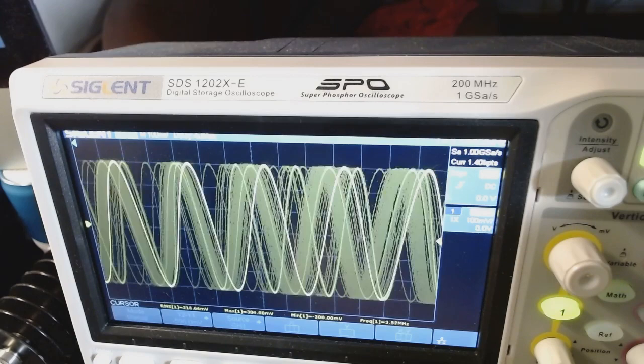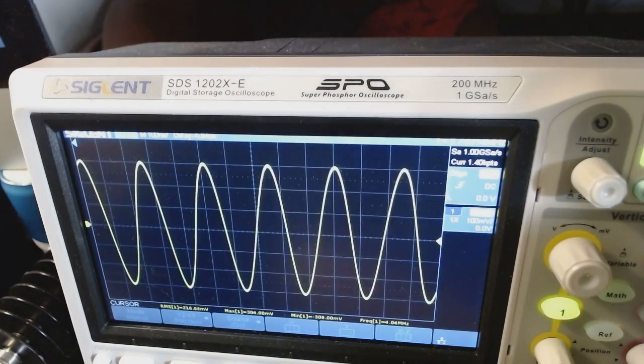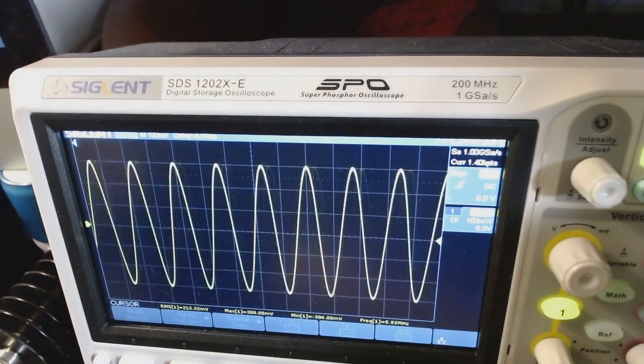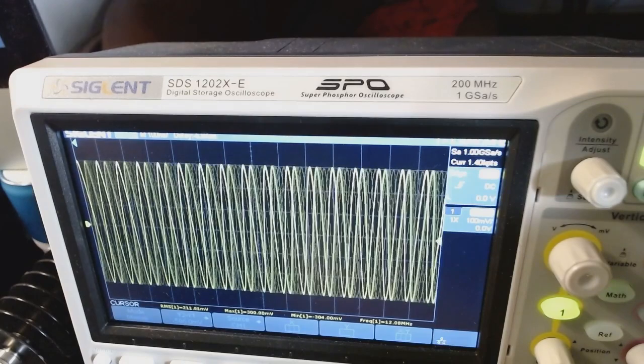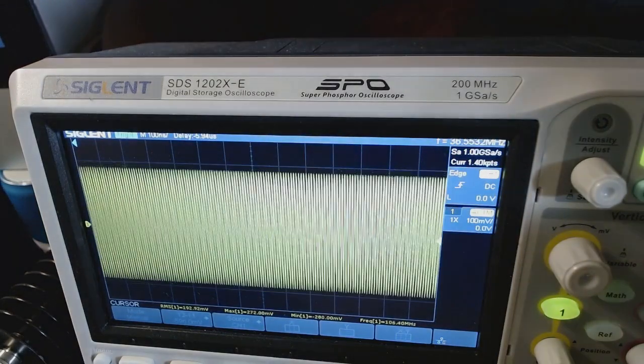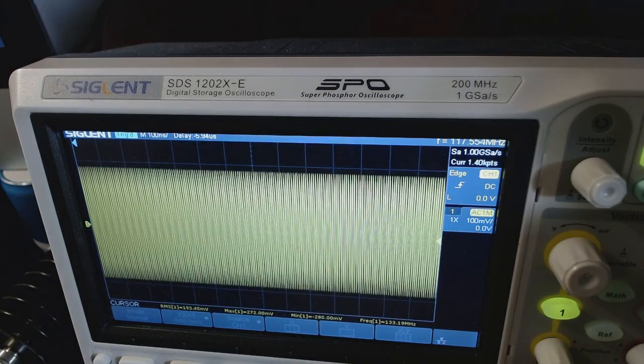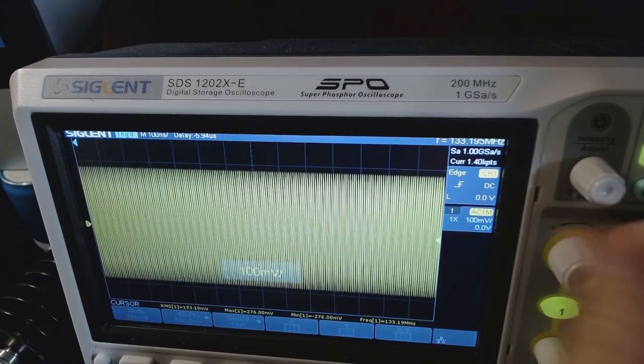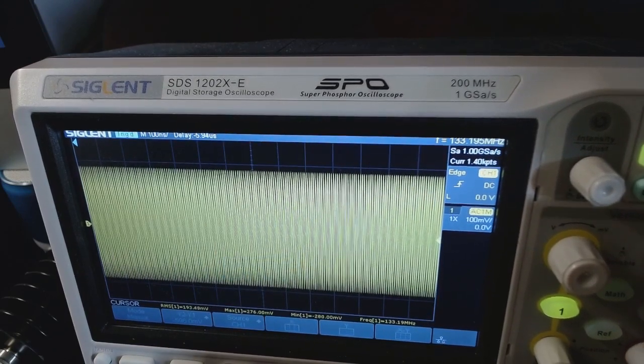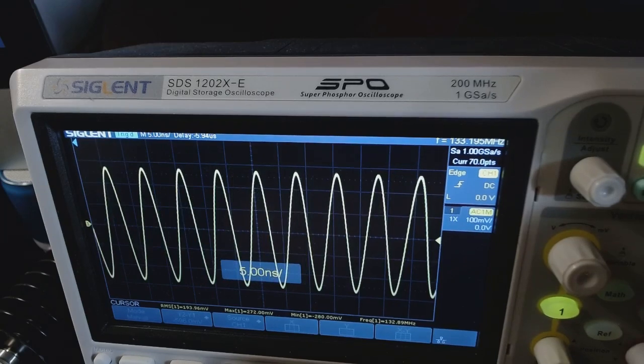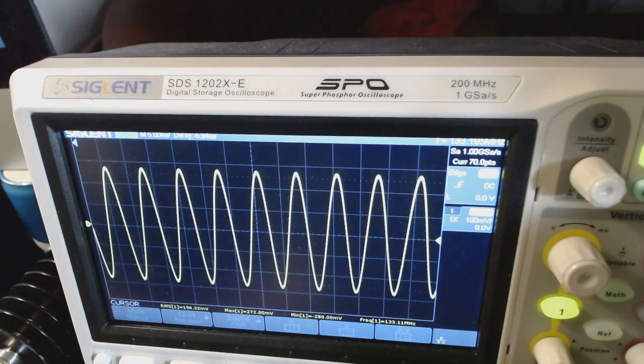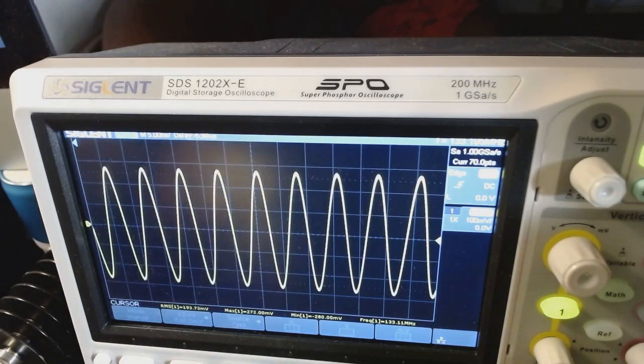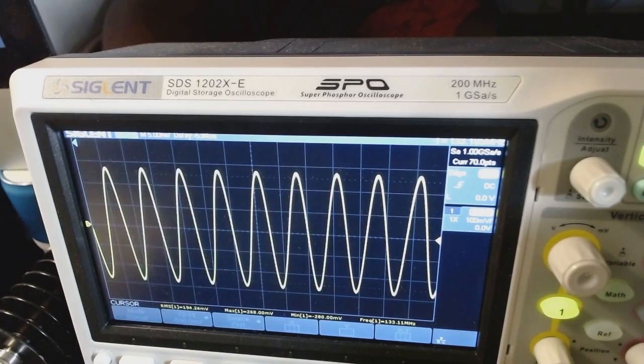So frequency is now 4 megahertz, for example. Let me go up much faster. Let's go to 100. Okay, so here I am at 133. Let me adjust the horizontal scale. Okay, so as you can see, it's not anymore at 300. It went down a bit, but we're still above the 210 limit, and we are at 133 megahertz.